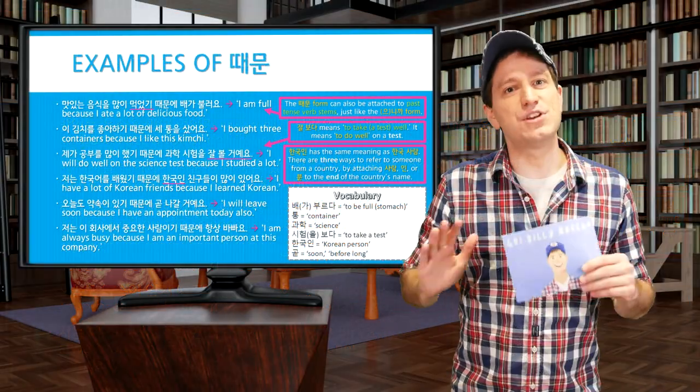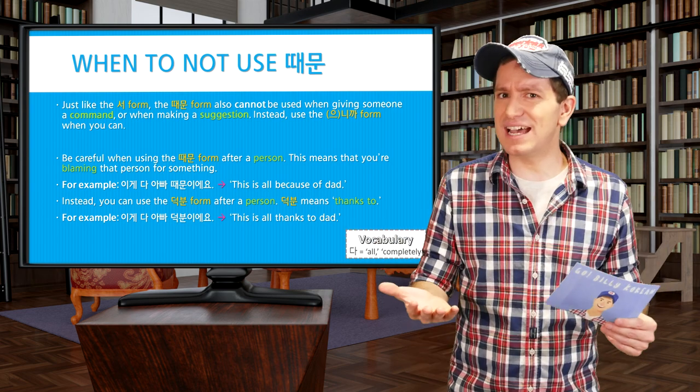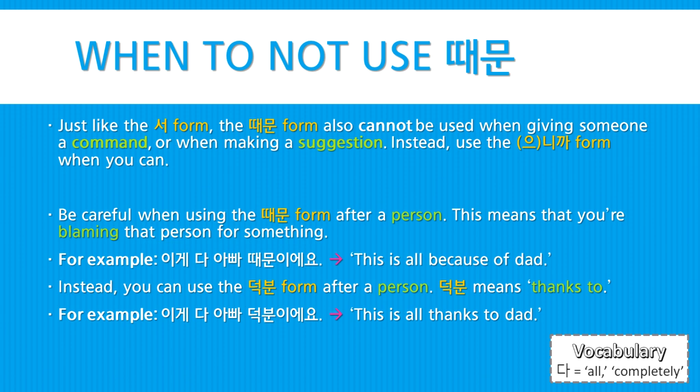So when can this 때문 form not be used? Well, just like the 서 form, you cannot use this form whenever you're giving a command or a suggestion to someone. Instead, use the 니까 form for that. Also, be careful when using the 때문 form after a person — this would mean that you're blaming that person for something. For example, 이게 다 아빠 때문이에요 — 'This is all because of dad' — would sound like you're blaming dad for everything. Instead, use the 덕분 form after a person. 덕분 means 'thanks to.' For example, 이게 다 아빠 덕분이에요 — 'This is all thanks to dad.'